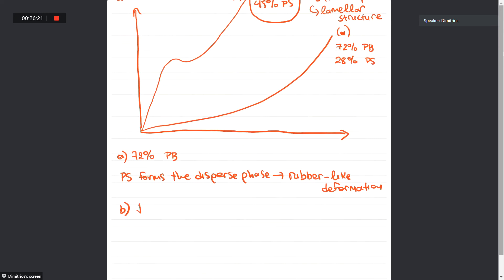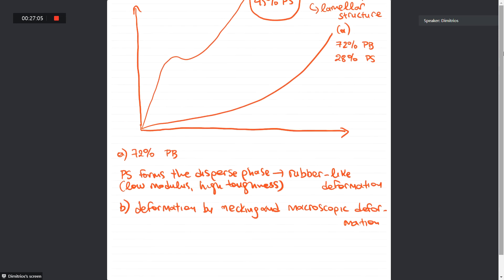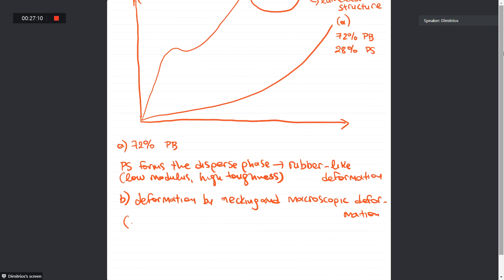So in this case, we have deformation by necking and macroscopic. It would be beneficial if you were mentioning in each curve characteristics such as low modulus for A, high toughness. In B, have average modulus and it is relatively strong or high strength.